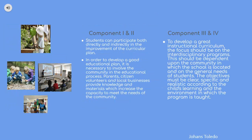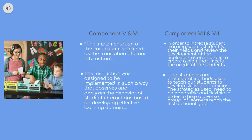Components one and two: in order to develop a good educational plan, it is necessary to involve the community in the educational process. Components three and four: to develop a great instructional curriculum, the focus should be on the interdisciplinary program, which should depend upon the community in which the school is located and its general needs. Components five and six: the instruction is designed to be implemented in a way that observes and analyzes student interaction based on the development of effective learning domains. Components seven and eight: in order to increase student learning, we must identify their needs and review the implementation to create a plan that meets those needs.